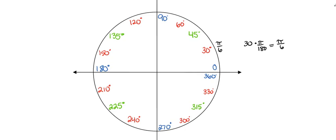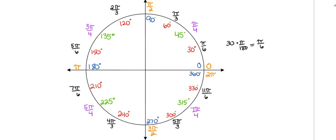Go ahead and press pause — no cheating — find all your radian measures. When you're done, press play and check your answers. You'll probably need to pause again to double-check. It's really important to make sure all your numbers are correct so you're not building on wrong answers.